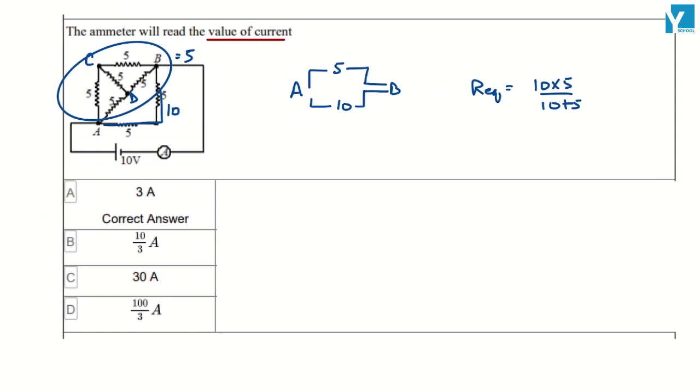Using V equals IR for the current value, we have voltage as 10. Calculating with the resistance, 10 times 15 divided by 50 equals 3 Ampere. This is going to be your answer.